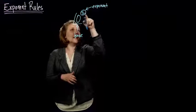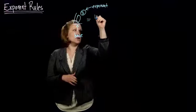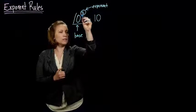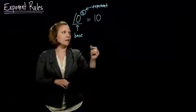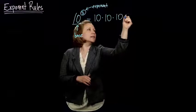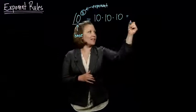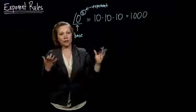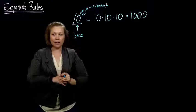So, this 10, the 10 is our base, the number we're going to be multiplying by itself. The 3 tells me I want to multiply it by itself 3 times. So, I have 10 times 10 times 10, and when I multiply all that together, I get 1,000. So, if you forgot what an exponent is, that's what an exponent is.